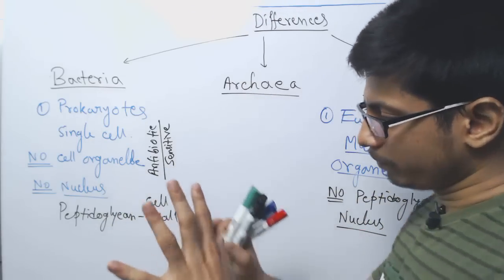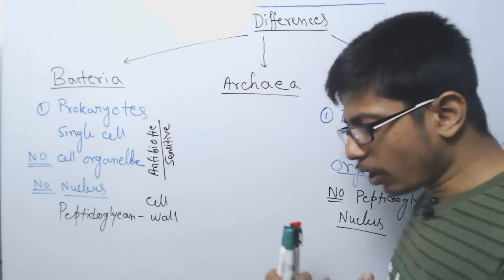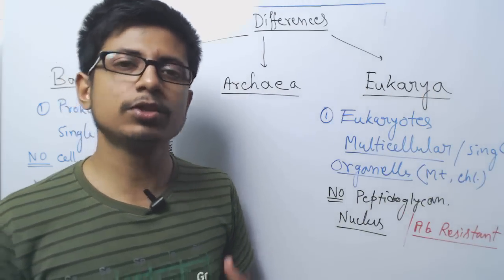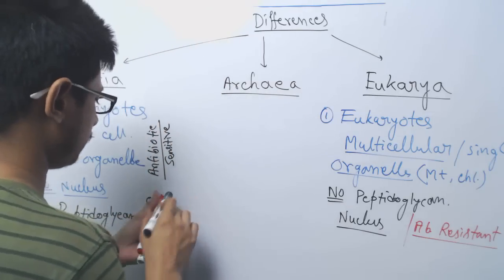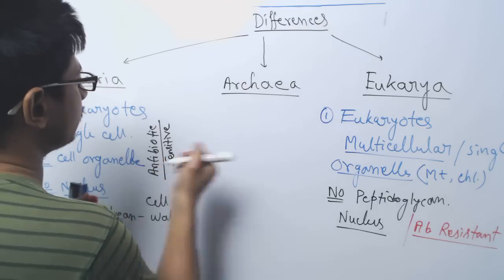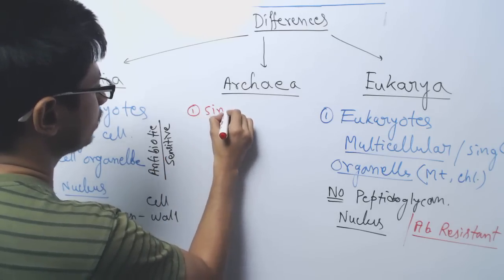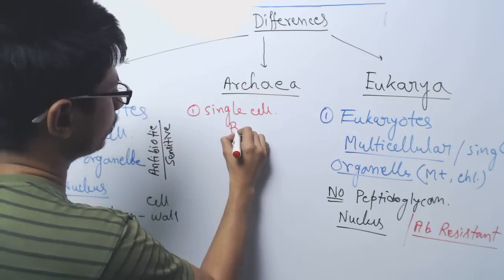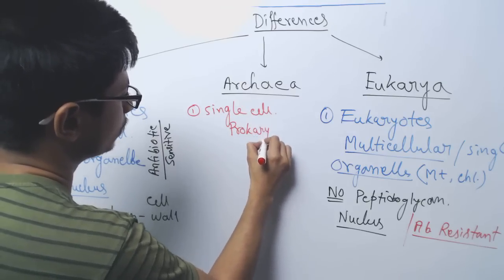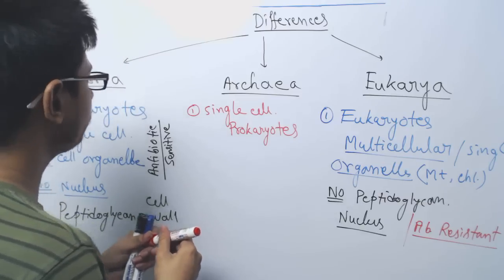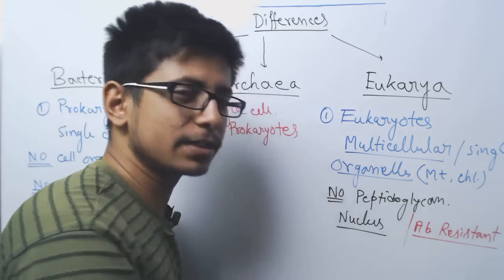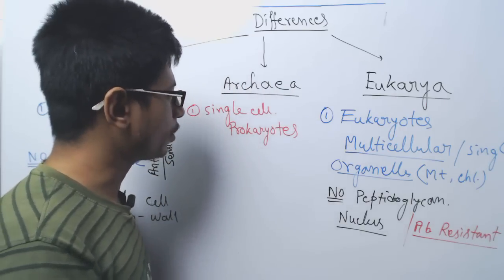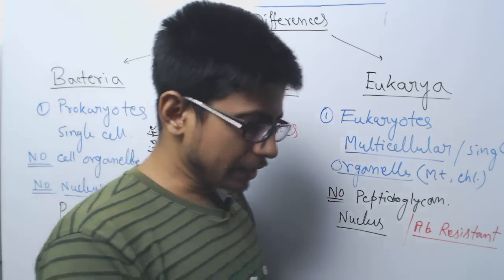If you look at archaea from an overview, archaea are also prokaryotes. They also have a single cell. They do not have that much complicated cell machinery. These are single cell prokaryotes. These characteristics are mixed with the bacteria type. They do not have cell organelles, nucleus membrane-bound, no chloroplasts, no mitochondria in archaea. They do not have any nucleus.